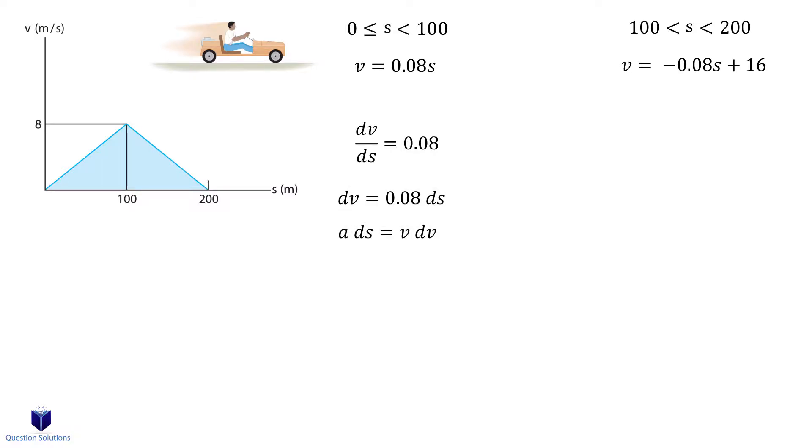Using ads is equal to vdv, we can substitute values in. Simplifying gives us a is equal to 0.0064s.